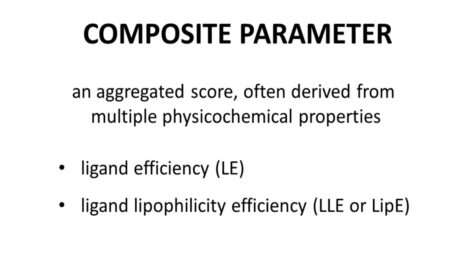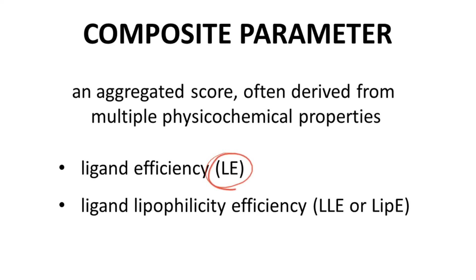Physicochemical properties can be combined, sometimes with experimental data, to create composite parameters. Composite parameters are often also called metrics or indices. Two of the most commonly encountered composite parameters used in lead discovery are ligand efficiency, LE, and ligand lipophilic efficiency, LLE or LIPE.